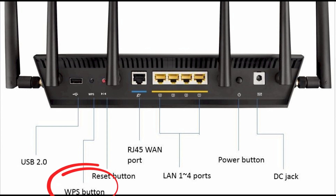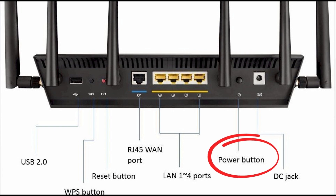When the power light turns on at the front of the router, you can release the WPS button. Restart the Asus router by manually pressing the power button off and then on again, and the router is now reset to its factory default settings as if it were new out of the box, and you can configure it from fresh.